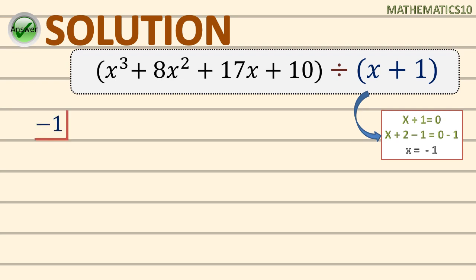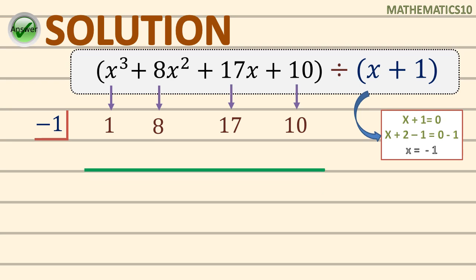Next, we need to get all the numerical coefficients used in our dividend. You are supposed to start with the leading coefficient, which is 1. Next is positive 8, positive 17, and lastly our constant is 10. Now let's start. First, you bring down the leading coefficient, which is 1. Then multiply it with the value of x, which is negative 1. So 1 times negative 1 gives us negative 1.